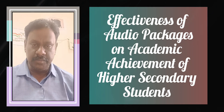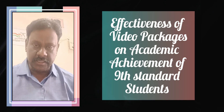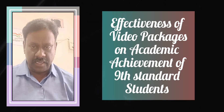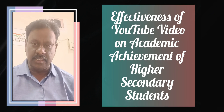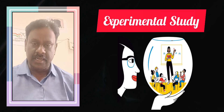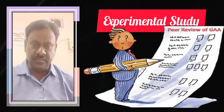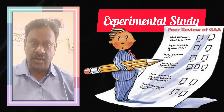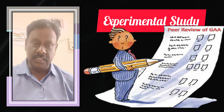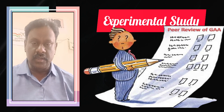For example: the effectiveness of audio packages on academic achievement of higher secondary students; effectiveness of video packages on academic achievement of 9th standard students; effectiveness of YouTube videos on academic achievement of higher secondary students. These are all examples for an experimental study. So an experimental study title will start with the word 'effectiveness,' which conveys the effect of an independent variable on the dependent variable.